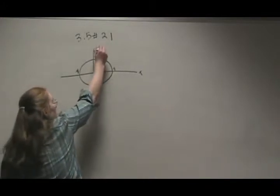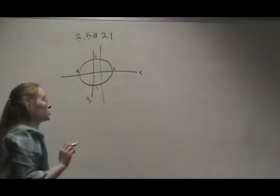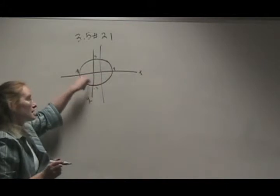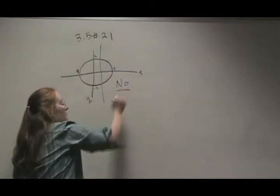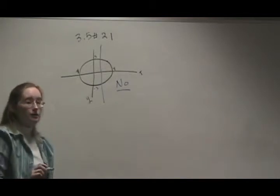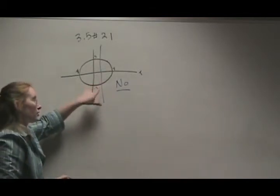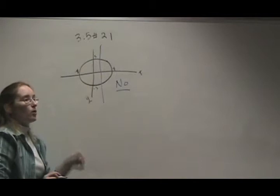You draw a vertical line anywhere on there, and if it hits two points, like this does, it is not a function. So this is not a function because it fails the vertical line test. We drew a vertical line and we hit the same point twice.